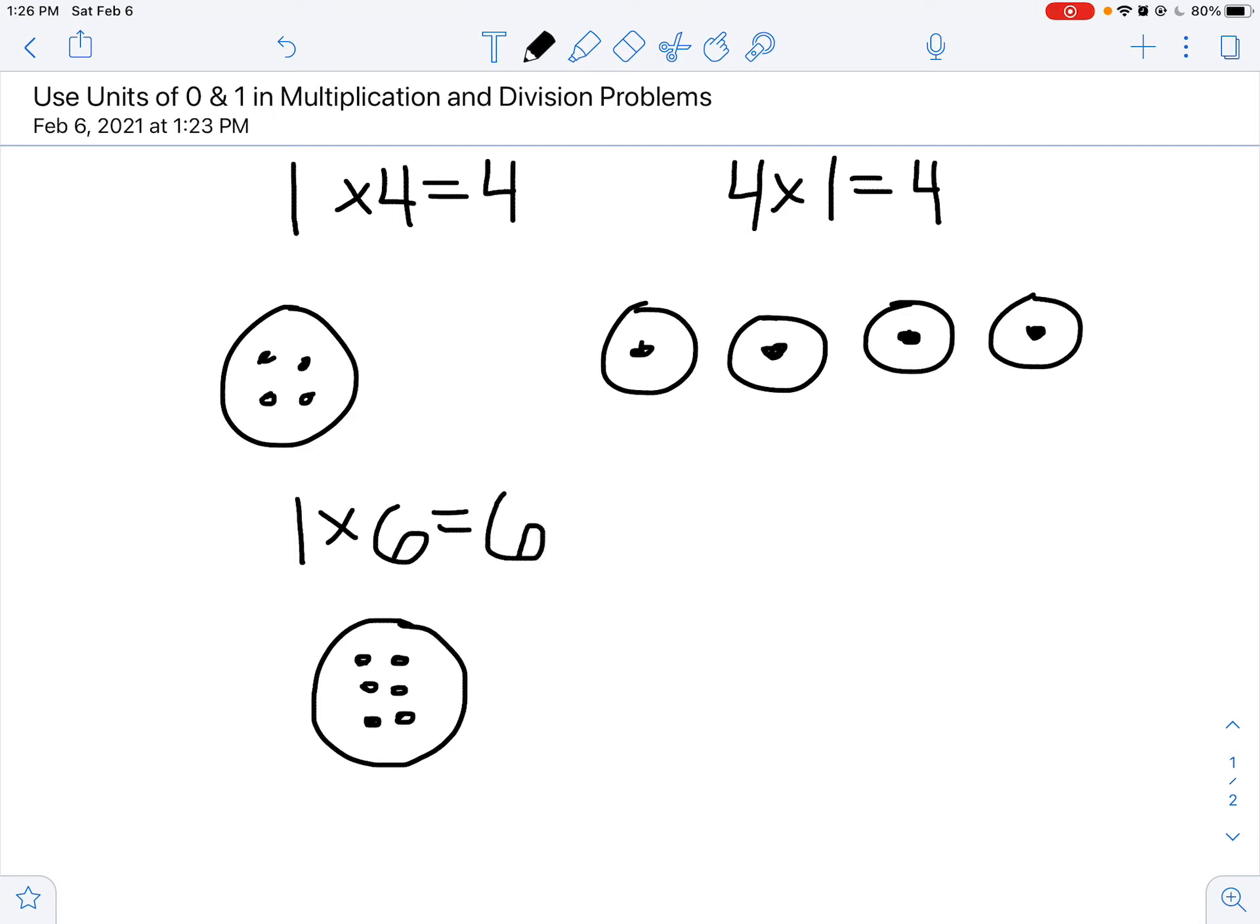If I want to model it as 6 times 1, I'm going to make 6 groups and simply put 1 in each group. And how many total do I have? 6. What do you guys notice? Yeah. If you said any time you multiply by 1, you just get that number, you're totally right.